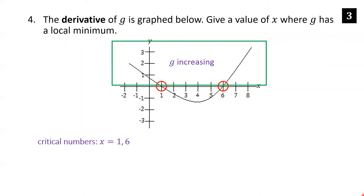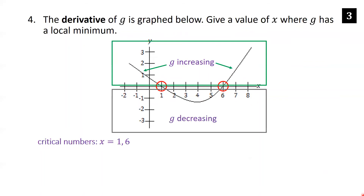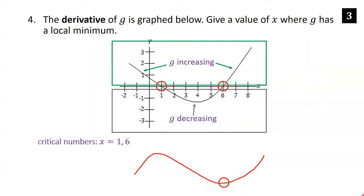When the derivative is above the x-axis (positive), the original function is increasing — so g is increasing before x equals 1 and after x equals 6. When the derivative dips below the x-axis, the original function is decreasing — so g is decreasing between 1 and 6. Sketching this: increasing up to 1, decreasing from 1 to 6, then increasing again after 6. The local minimum is at the bottom, which corresponds to x equals 6.